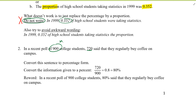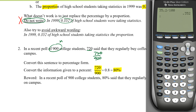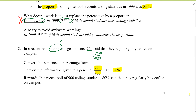Out of 900 means over 900, so I divide: 720 over 900, which gives me 0.8. Then times 100 gives me the percentage form. Using a calculator: 720 over 900 gives the decimal 0.8. If I want to convert this decimal to a percentage, I multiply by 100 and attach the percentage symbol, which is 80%.